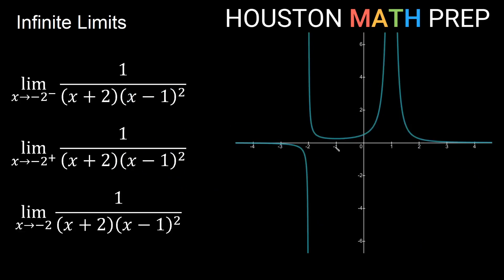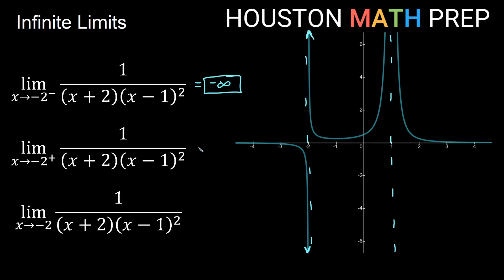Looking at one more rational function, I have a vertical asymptote at negative 2 and another at positive 1. For the limit as x approaches negative 2 from the negative side, on the left side of that asymptote the graph is going negatively infinite, so we say negative infinity. For the limit as x approaches negative 2 from the positive side, from the right side of the asymptote, we're on this part of the graph going up off the edge of the screen — positive infinity. Since these are opposite signs, the overall limit does not exist.